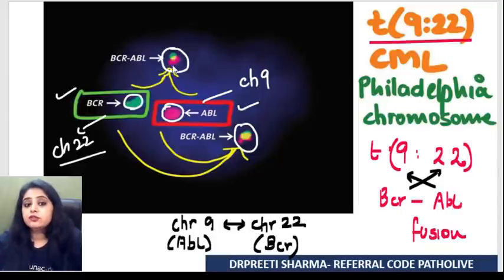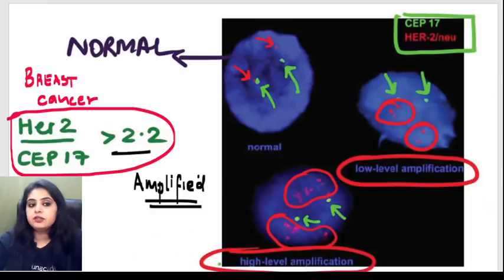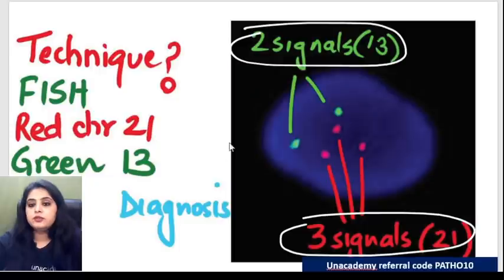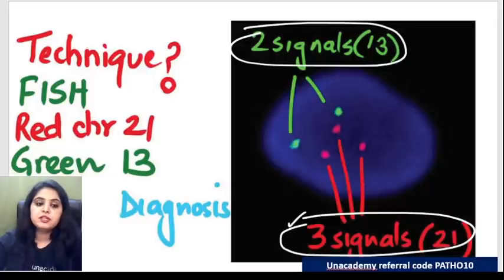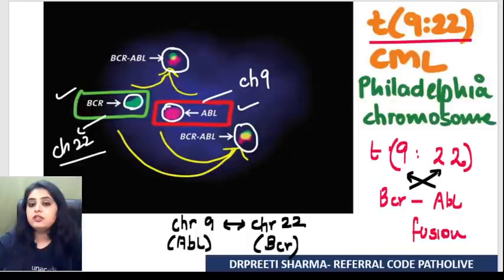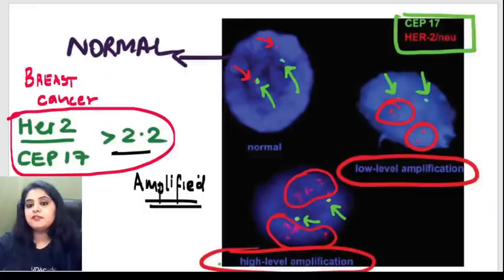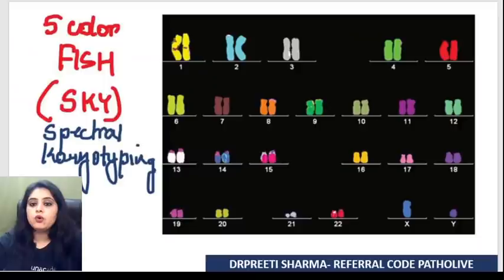So FISH tells me three things: one, you can count chromosome signals and detect trisomies or monosomies; two, you can detect whether any translocation or fusion is happening; and three, you can talk about any gene amplification, such as HER2/neu amplification. All of the above were two-color FISH.